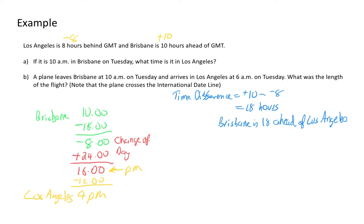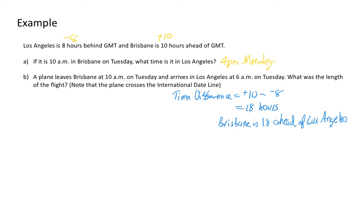Because there has been a change of day, I need to include that in my answer. Los Angeles is behind Brisbane, so it's going to be 4pm on the day before. The day before Tuesday is Monday. So if it's 10am in Brisbane on Tuesday, it's going to be 4pm on Monday in Los Angeles.